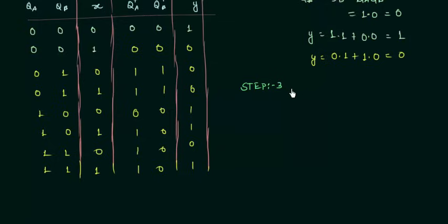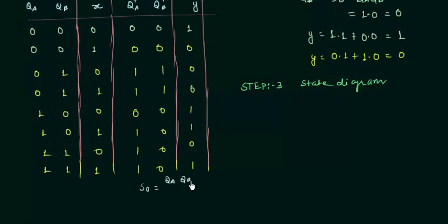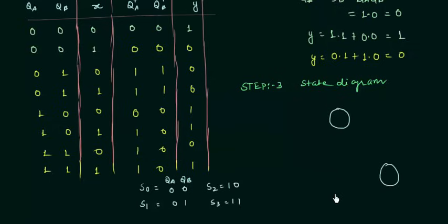Step 3 is the final step — finding the state diagram. Since there are 2 flip-flops, there will be 4 possible states. The four states are: S0 where QA,QB = 0,0; S1 where QA,QB = 0,1; S2 where QA,QB = 1,0; and S3 where QA,QB = 1,1. I will draw 4 circles to represent these states.